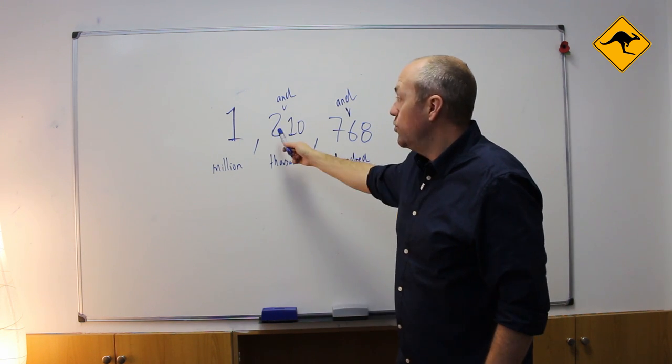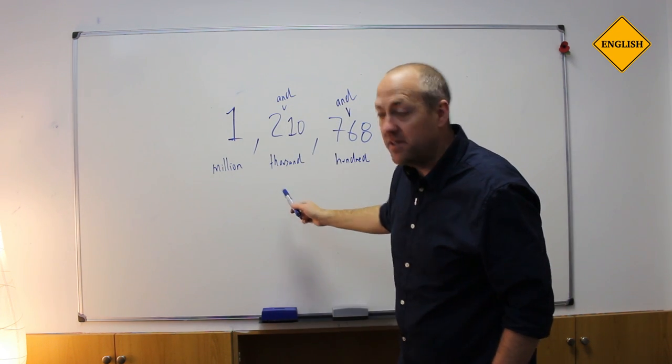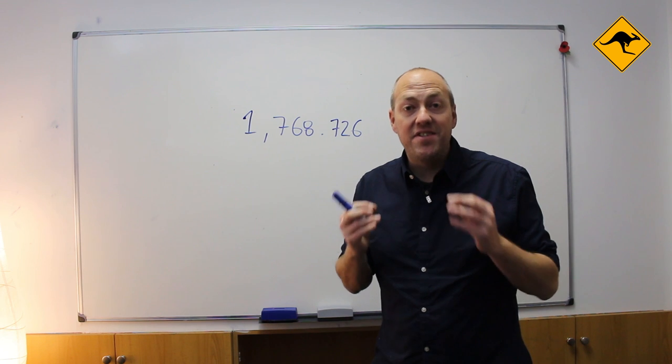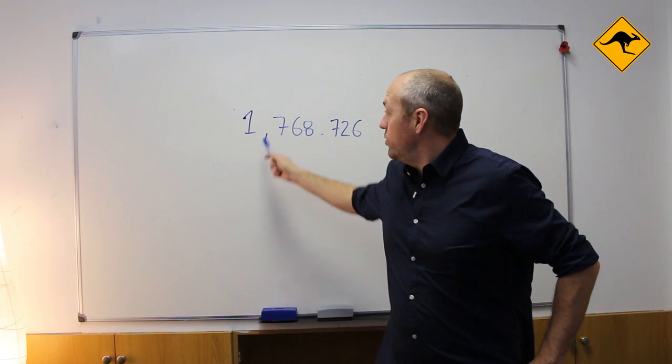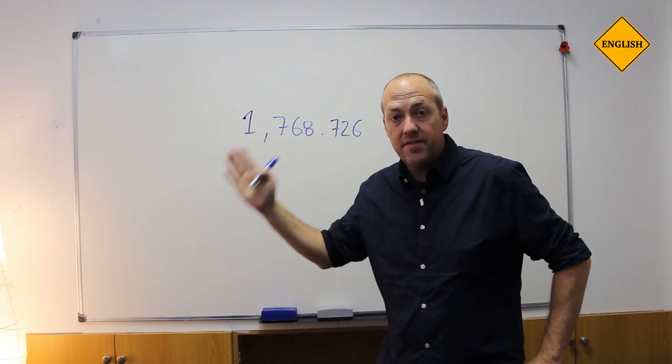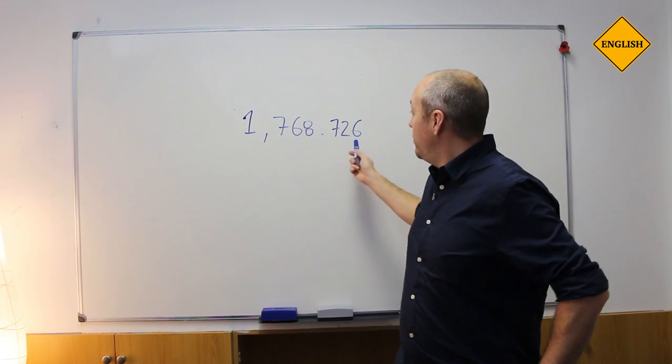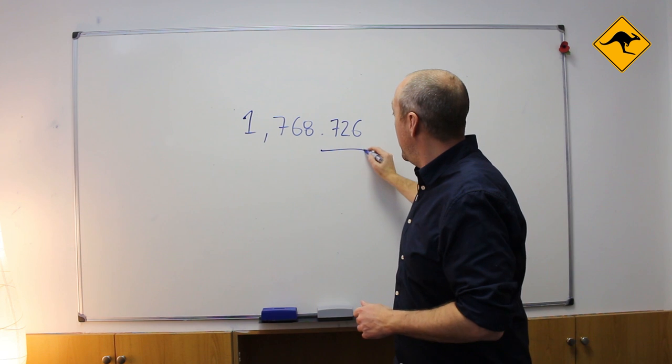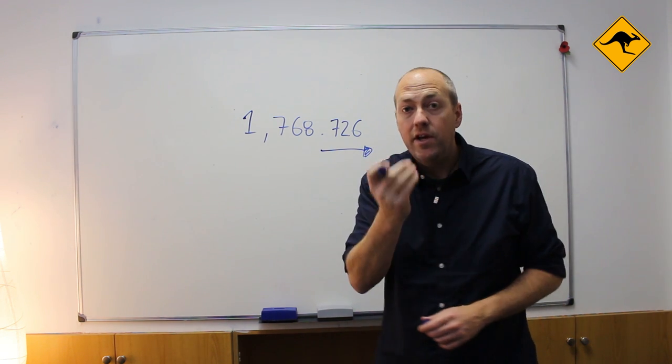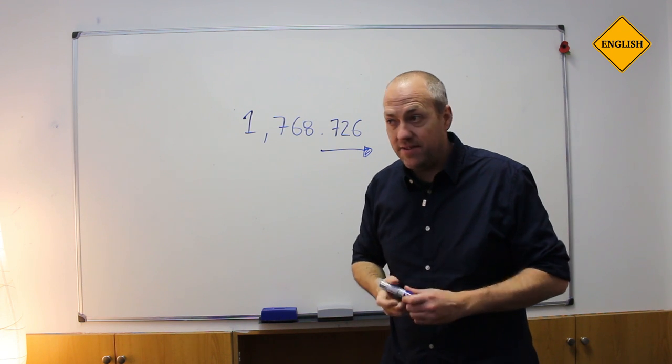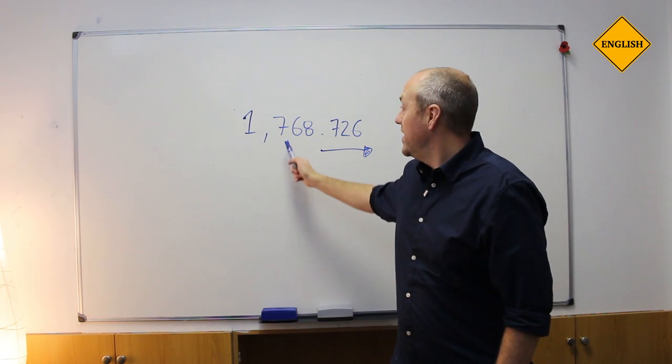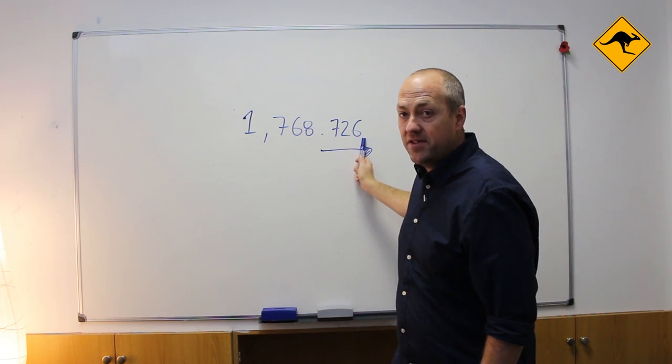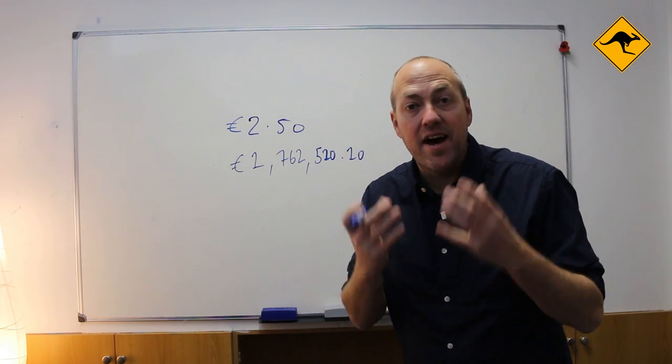So what about numbers that have decimals? You will notice in English we use a comma to separate the different units, but if we have a decimal we use a point. And what's really interesting is that after the decimal point we say each number individually. So 1768.726.